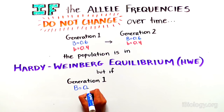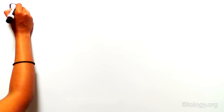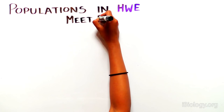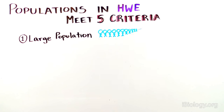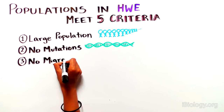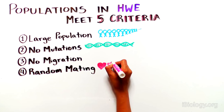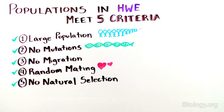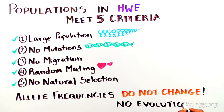Hardy and Weinberg postulated that if allele frequencies did not change over time, the population was in Hardy-Weinberg equilibrium. In contrast, if allele frequencies do change over time, the population is not in Hardy-Weinberg equilibrium. For a population to be in Hardy-Weinberg equilibrium, five criteria must be met: one, the population must be large; two, no mutations occur; three, no migration into and out of the population, also called gene flow; four, mating must be random; and five, no natural selection can occur. If these five criteria are met, evolution is not occurring at that locus and allele frequencies will remain the same over time.